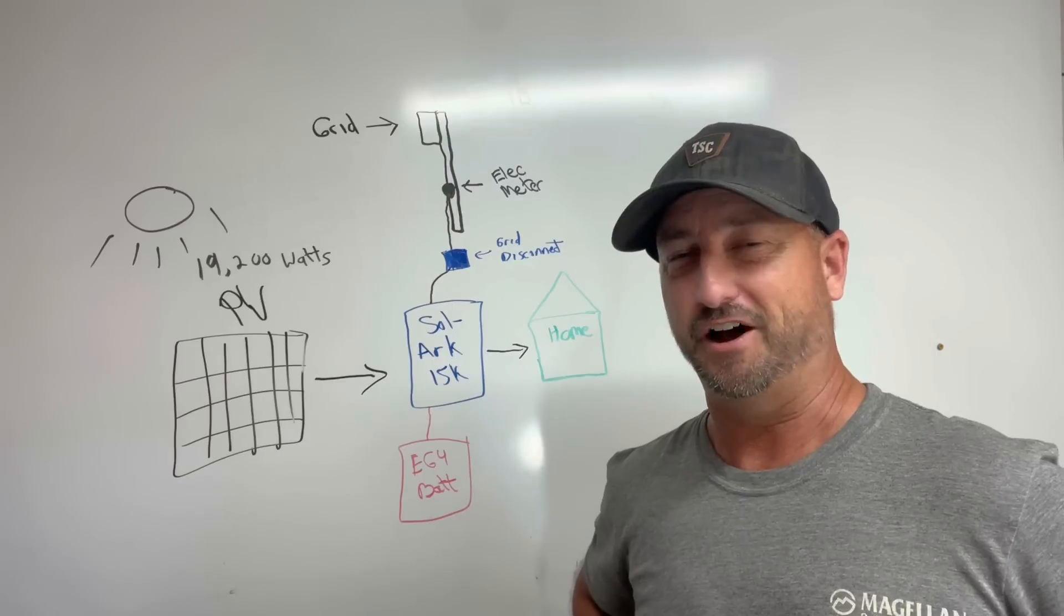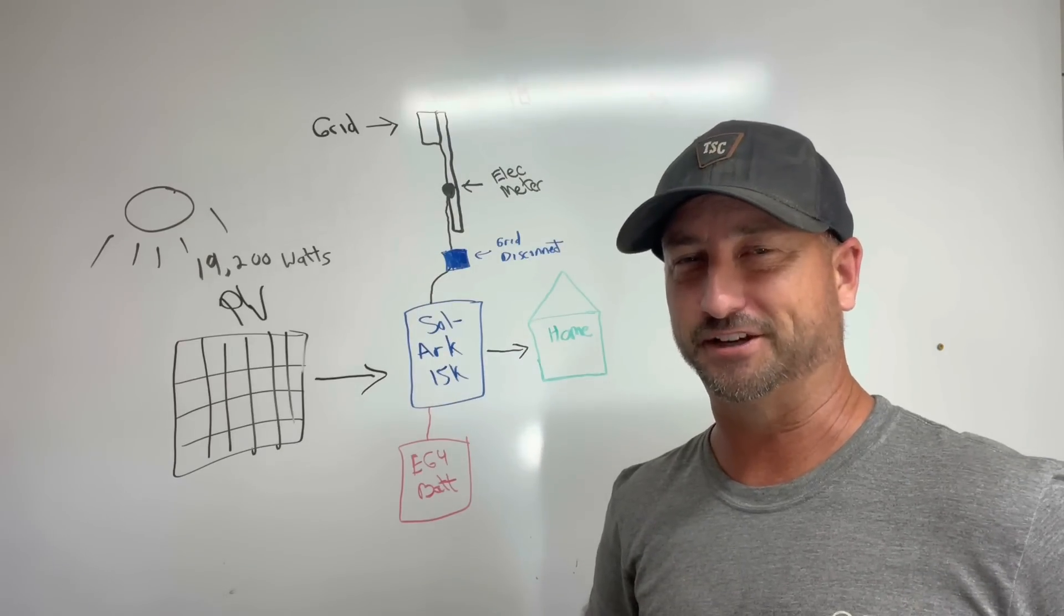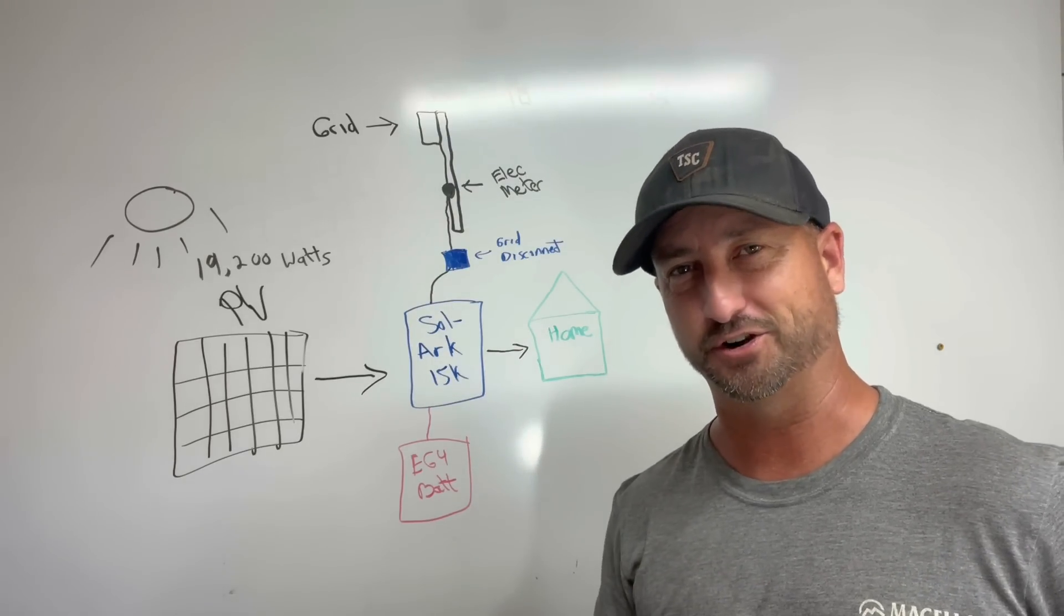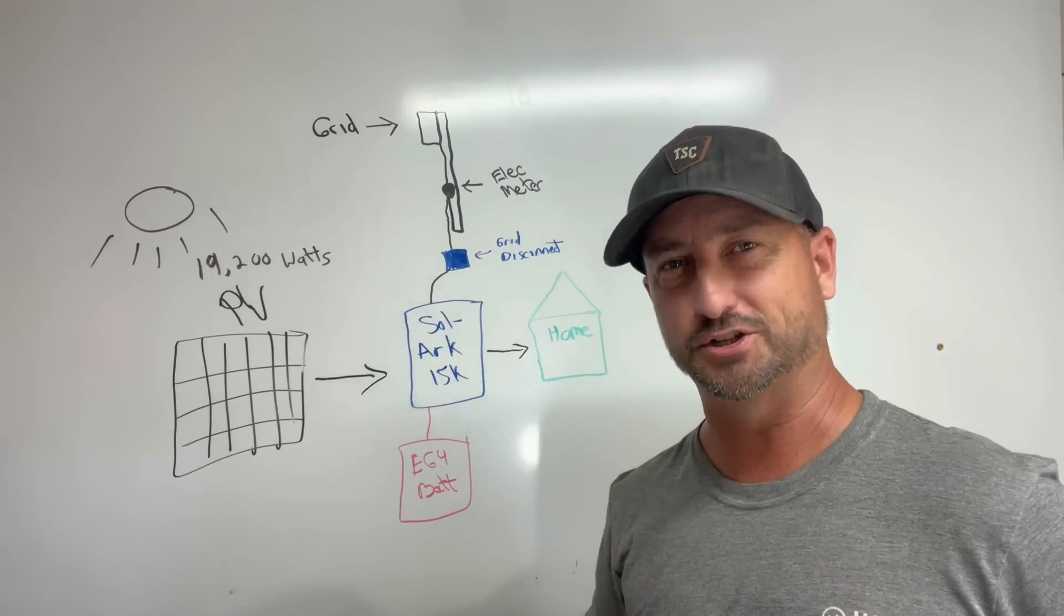But if you can max this thing out with those 19,500 watts of solar panels or as close as you can to get to it, on those cloudy days you're going to be happy you did. You'll still be able to power your house and get a charge on your batteries. So the closer you can get to the max the better in my opinion.